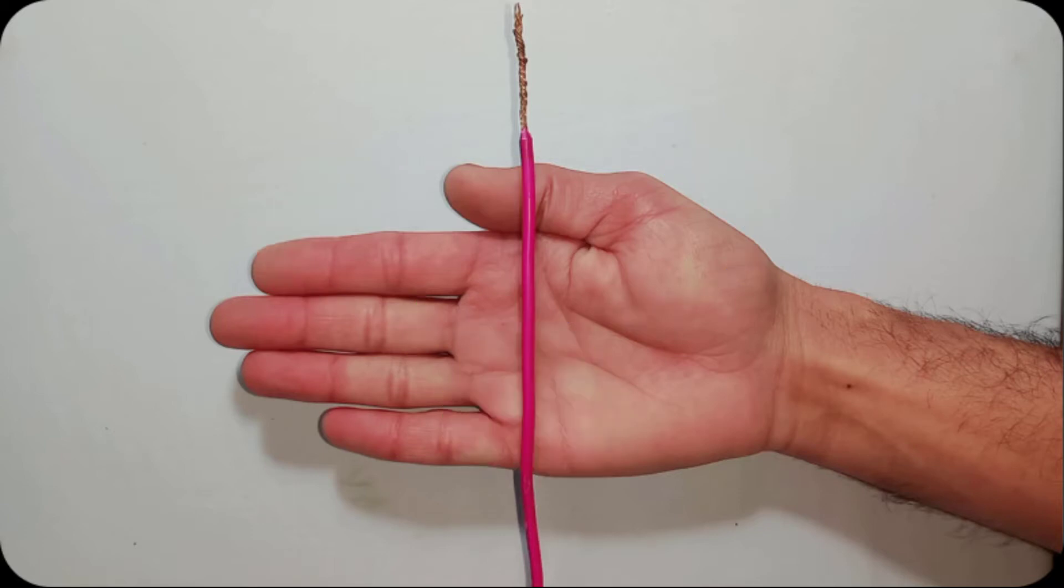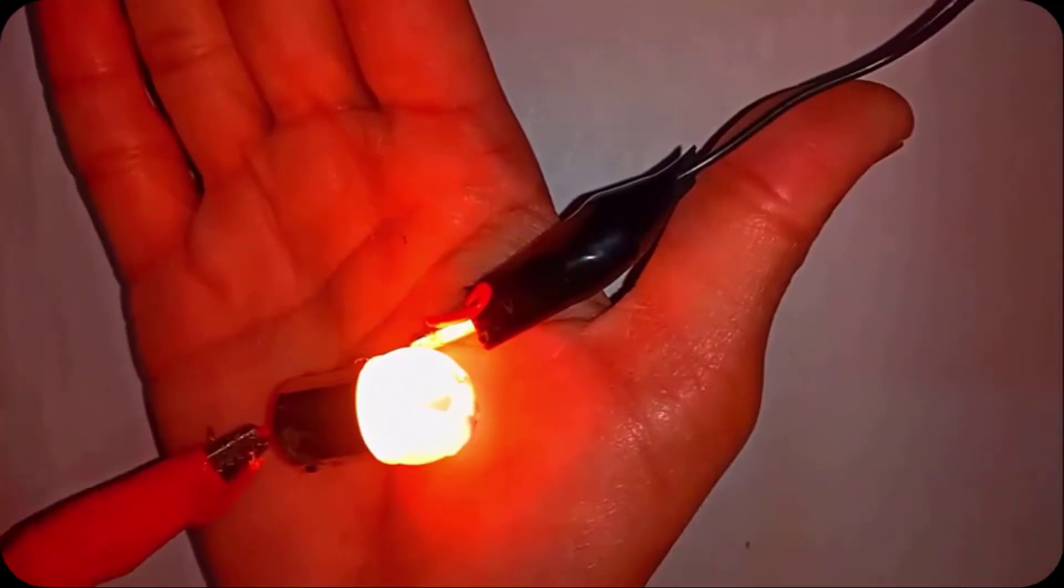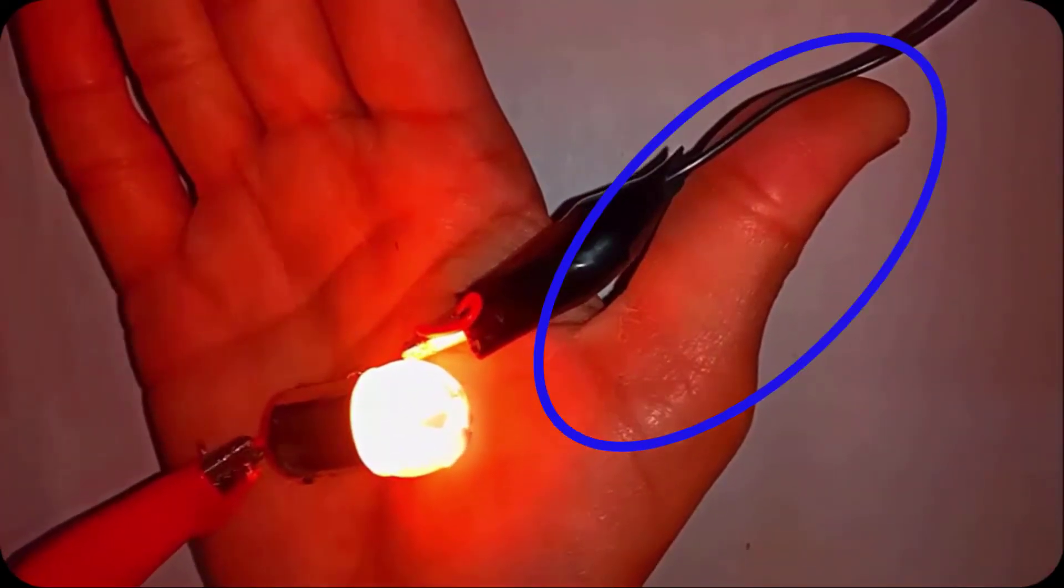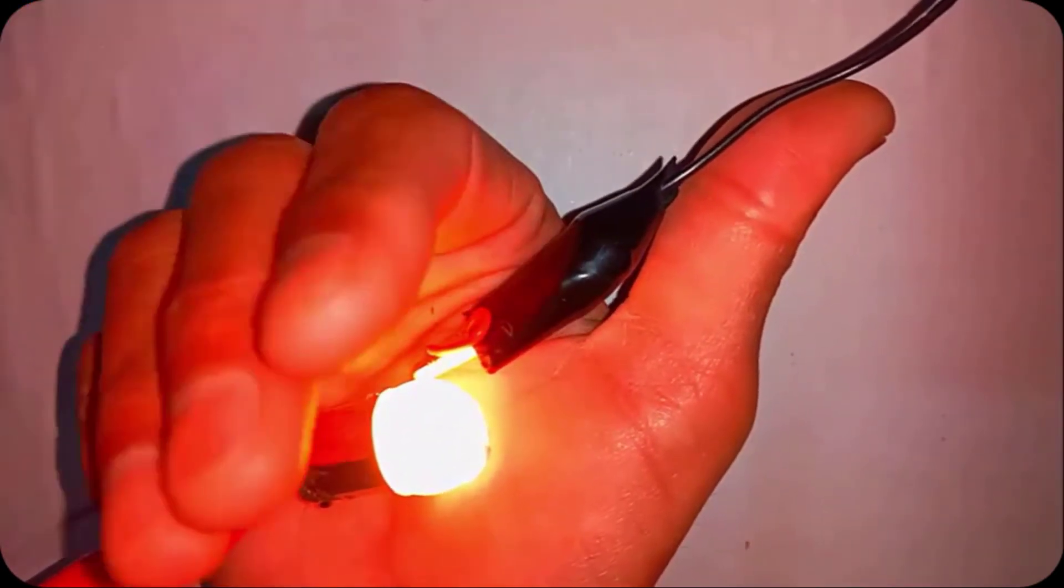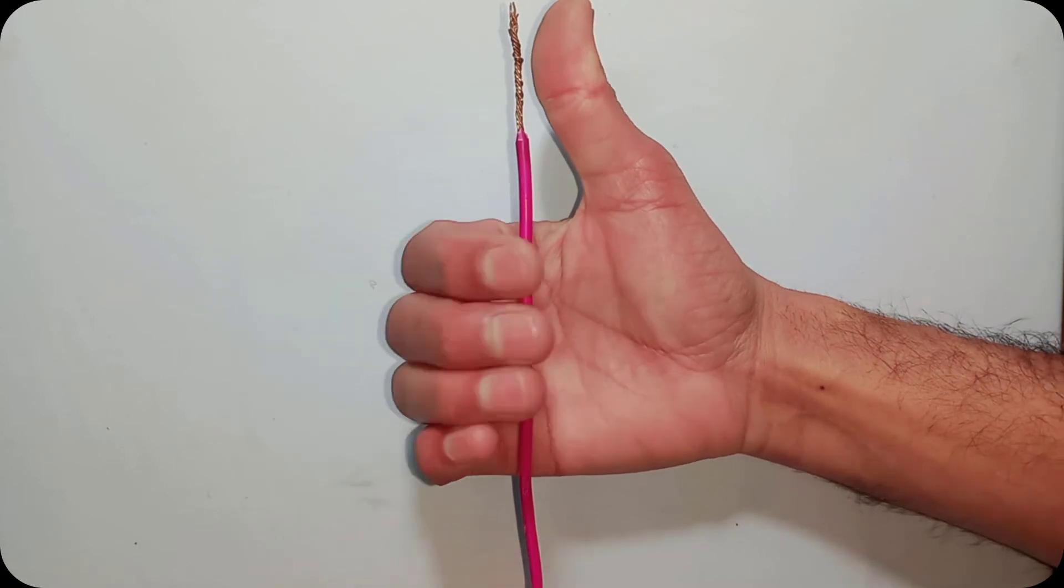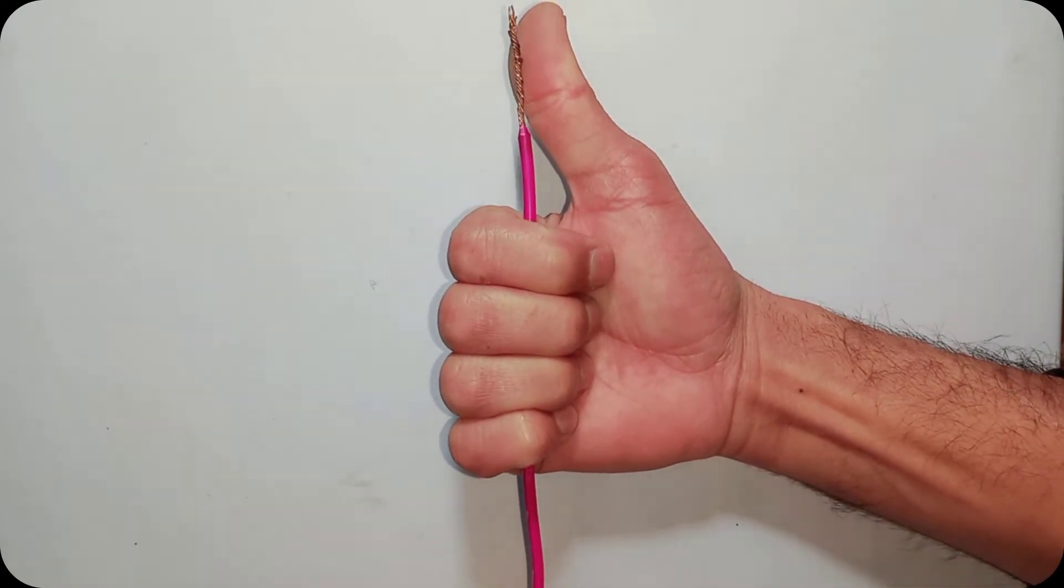We apply Fleming's right hand rule. Point the thumb of the right hand in the direction of the electric current and curl the fingers around the conductor. The fingers will represent the direction of the magnetic field lines around the conductor.